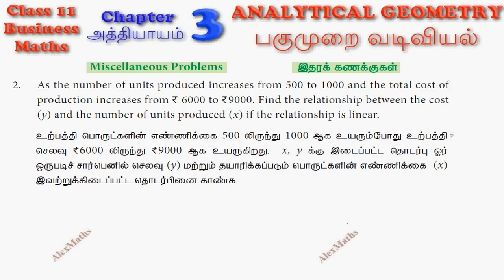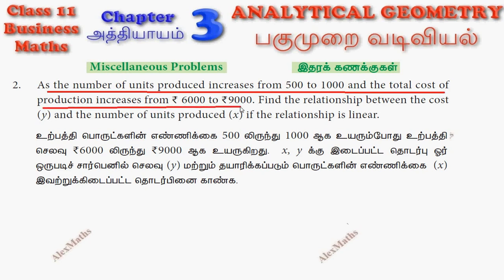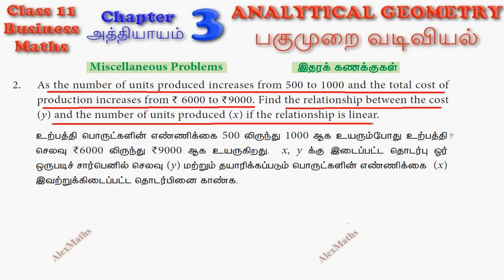Hi students, this is Alex here. Miscellaneous Problems, question number 2. If the number of units produced increases from 500 to 1000 and the total cost of production increases from 6000 to 9000, find the relationship between the cost y and the number of units produced x, if the relationship is linear.